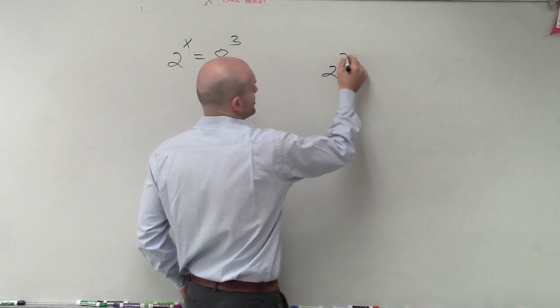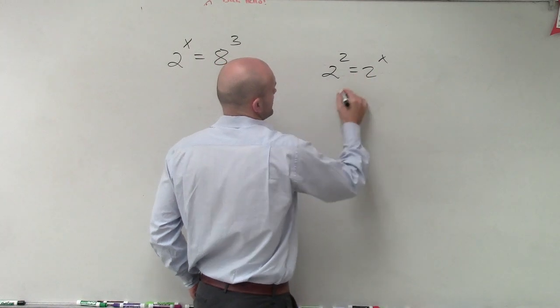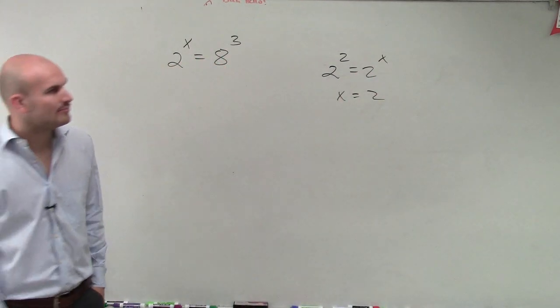Alright, this is pretty basic. You said 2 squared equals 2x, therefore we knew x had to equal 2, right? Pretty easy.